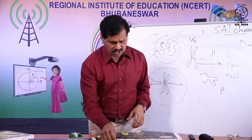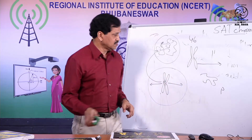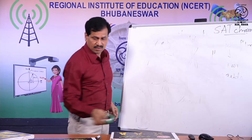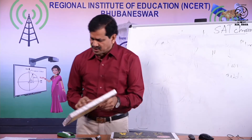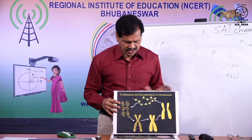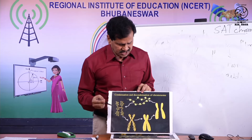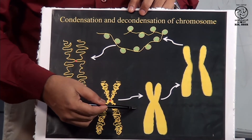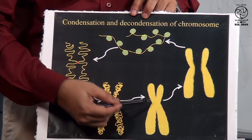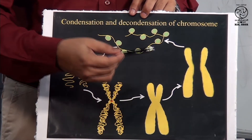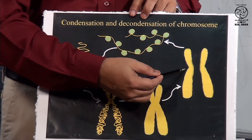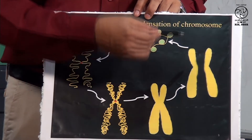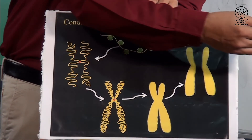These chromatin fibers, as we can discuss, you can see here — this is a chromatin fiber undergoing condensation at the beginning of the cell cycle. Then, during the cell cycle, each chromosome is having two chromatids. During cell division, the two chromatids of a chromosome segregate — disjunction takes place — and they separate from each other. One chromatid moves to one pole, and one moves to the other pole.